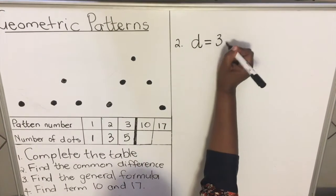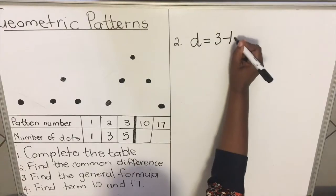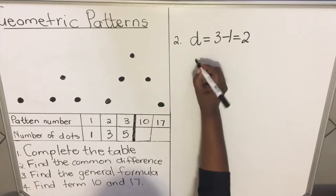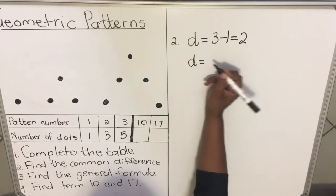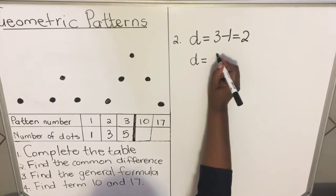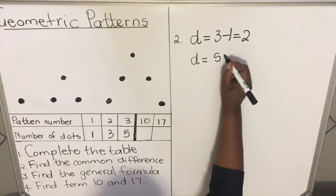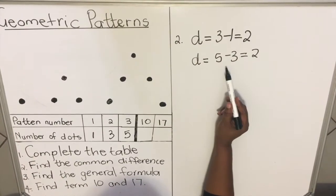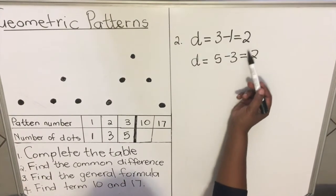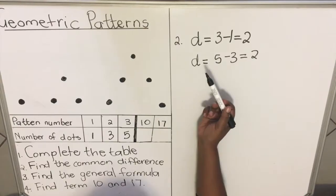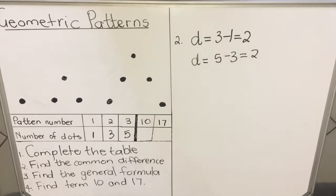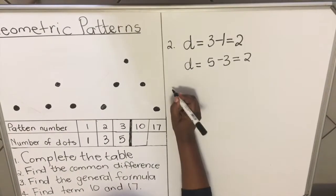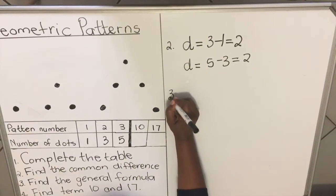Take any two consecutive terms and subtract the bigger minus the smaller. Three minus one equals two. Then check: five minus three also equals two. Since we get two every time, the common difference d equals two — it is common, and you subtract to get it.